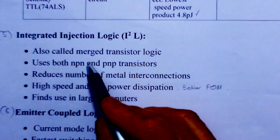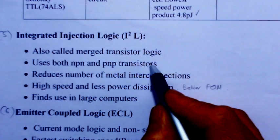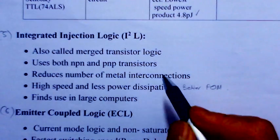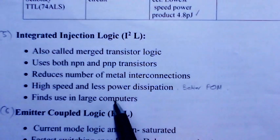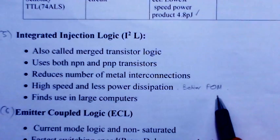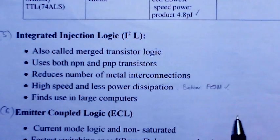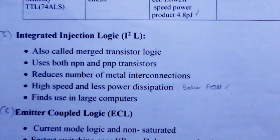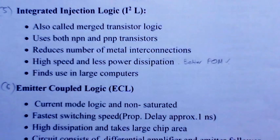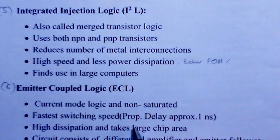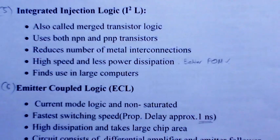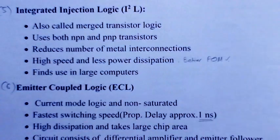Integrated injection logic (I2L), also called merged transistor logic, uses both NPN and PNP transistors, reducing the number of metal interconnections. This allows high component density, high speed, less power dissipation, and a better figure of merit. It is used in large computers. Emitter coupled logic (ECL) is a very important non-saturated, current mode logic with the fastest switching speed — propagation delay of approximately 1 nanosecond — but with high power dissipation, large chip area, and circuits using differential amplifiers and emitter followers.